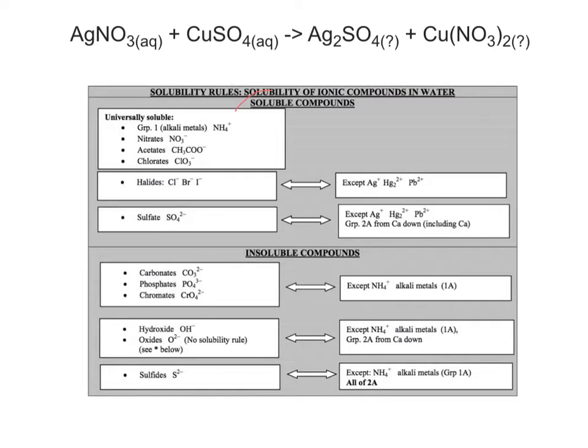Let's first talk about soluble compounds. These are compounds that will dissolve in water. If a compound has any of these substances here, meaning a group 1A metal or ammonium, nitrate, acetate, or chlorate, if any of these things are present in a compound,